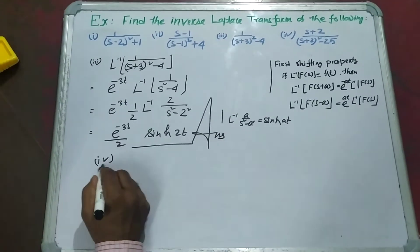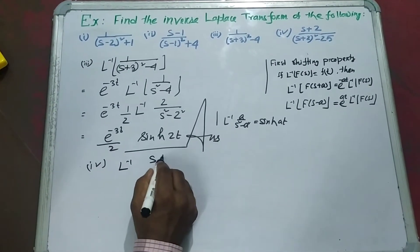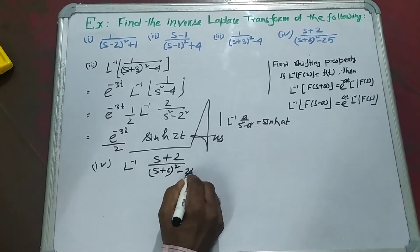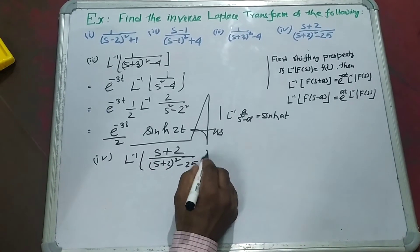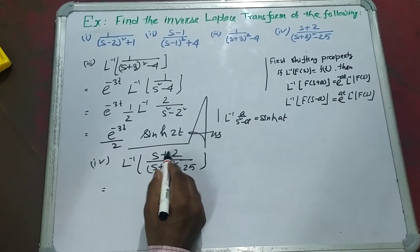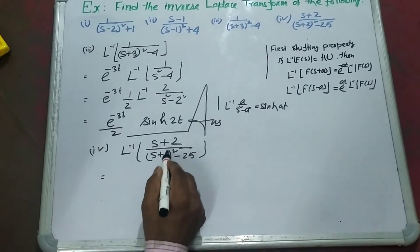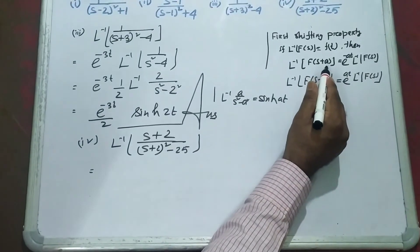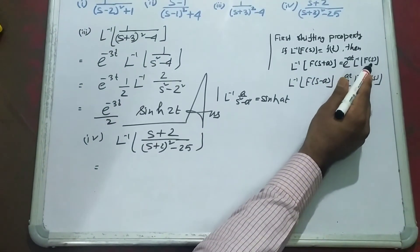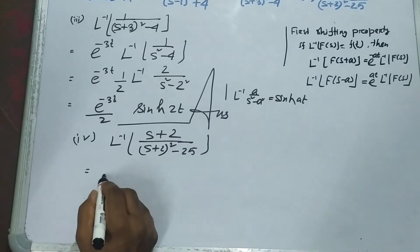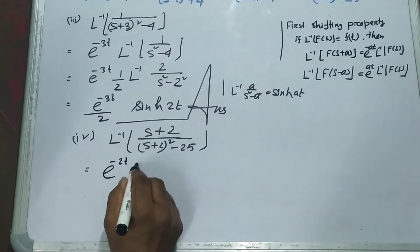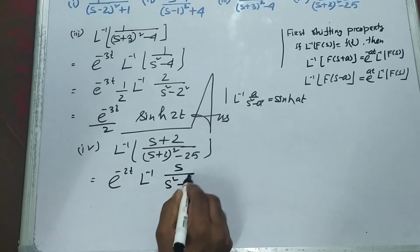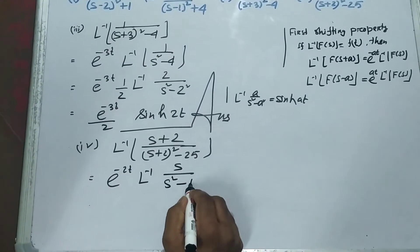Now consider number 4: L inverse of (s plus 2) by (s plus 2) whole square minus 25. We remove this 2 using the same formula: s plus A gives e to the power minus At times L inverse F(s). So we get e to the power minus 2t times L inverse of s by (s squared minus 25), which is s squared minus 5 squared.